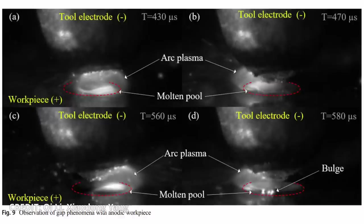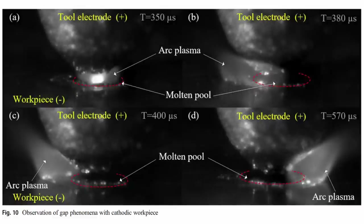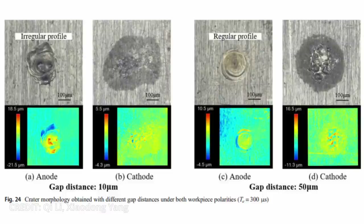On the surface of the anode workpiece, as the arc plasma on the anode is restricted by the molten pool, higher energy density caused by smaller gap distance might intensify the fluctuations of the molten pool during discharge and thus rapid arc plasma moving speed, generating a crater with a more irregular shape and a larger diameter. By comparison, on the cathode workpiece surface the arc plasma could move out of the molten pool. A higher energy density caused by the smaller gap distance also means higher electrode emission density, which might require the arc plasma to move with a larger amplitude and faster speed. Due to this quicker movement a smaller volume of material was removed and thus a crater with larger diameter and smaller depth is created.